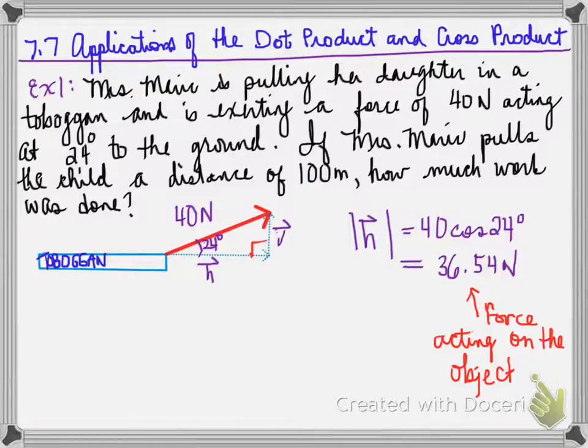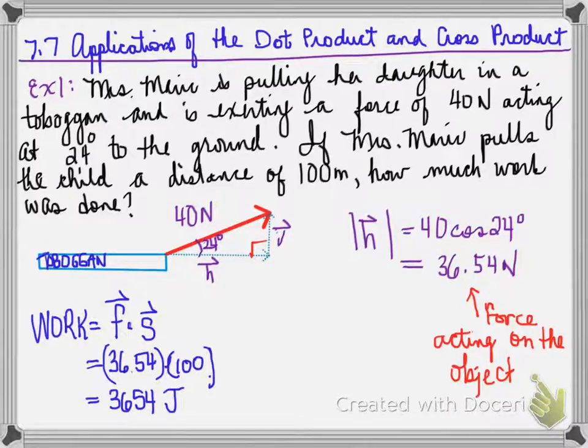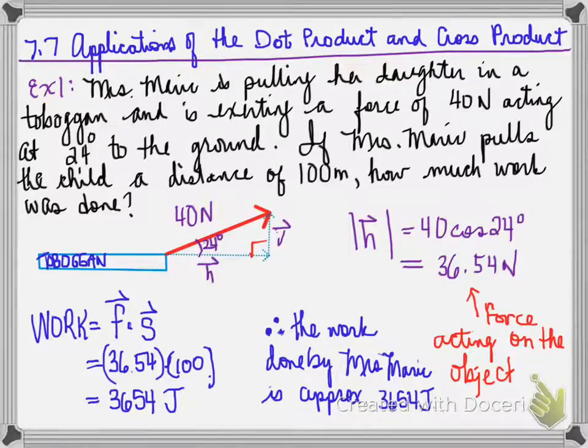So this is the force acting on the object. And now we can use this to determine how much work was done by taking the force and multiplying it by the distance that it was being pulled. And 36.54 is the force multiplied by 100, which is the distance. And we determine that the work is 3654 joules. All work is measured in joules. The work done by Mrs. Merrick is approximately 3654 joules.